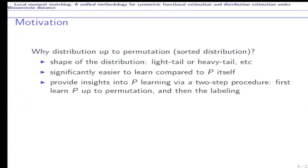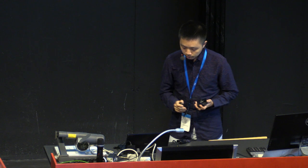And thirdly, sorted distribution provides insights into estimating p via a two-step procedure. The first step is to estimate the probability multi-set, that is to estimate p after permutation. The second step is to label the probability. So our problem is just the first step.